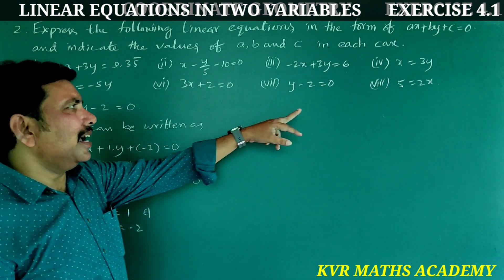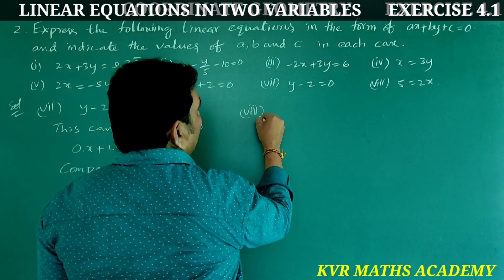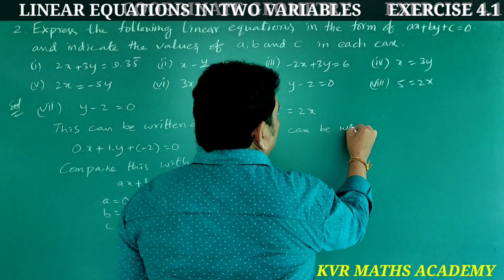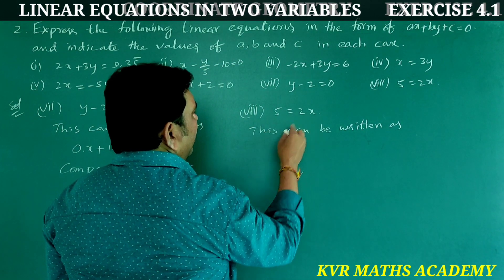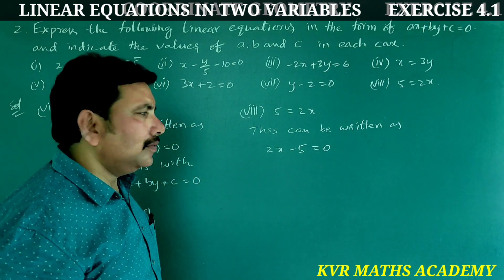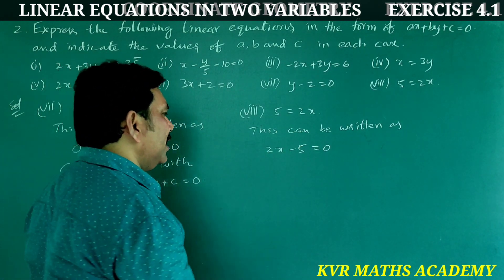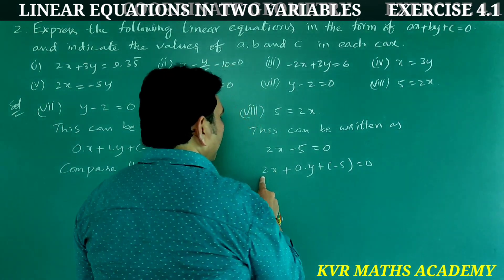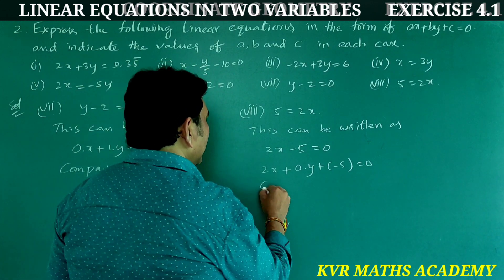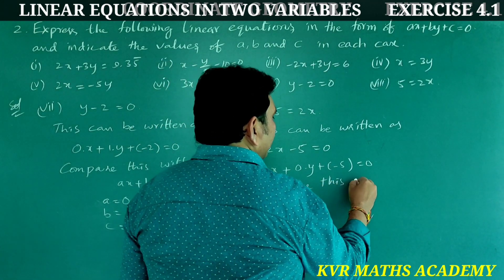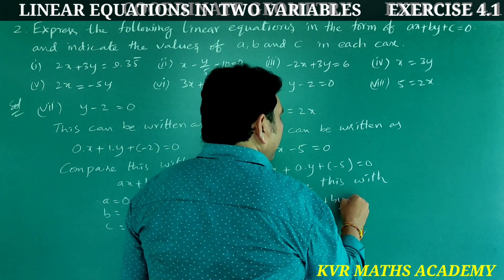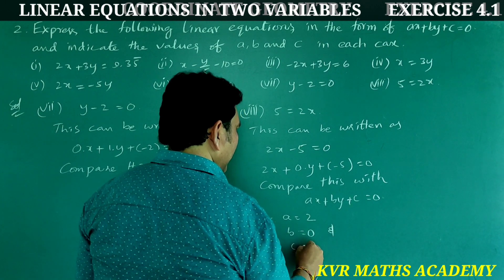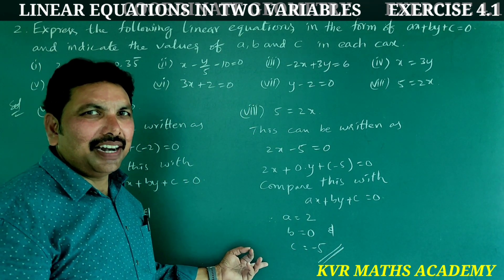Eighth: 5 = 2x. This can be rewritten as 2x − 5 = 0, and since there is no y term: 2x + 0·y + (−5) = 0. Comparing with ax + by + c = 0: a = 2, b = 0, and c = −5. Have you understood clearly? Note it down.